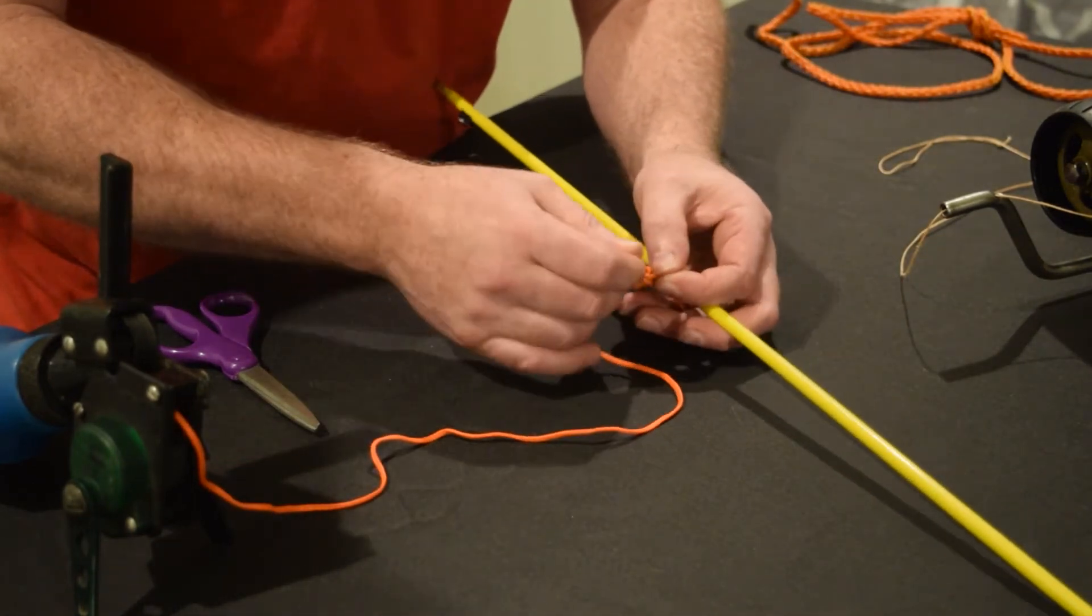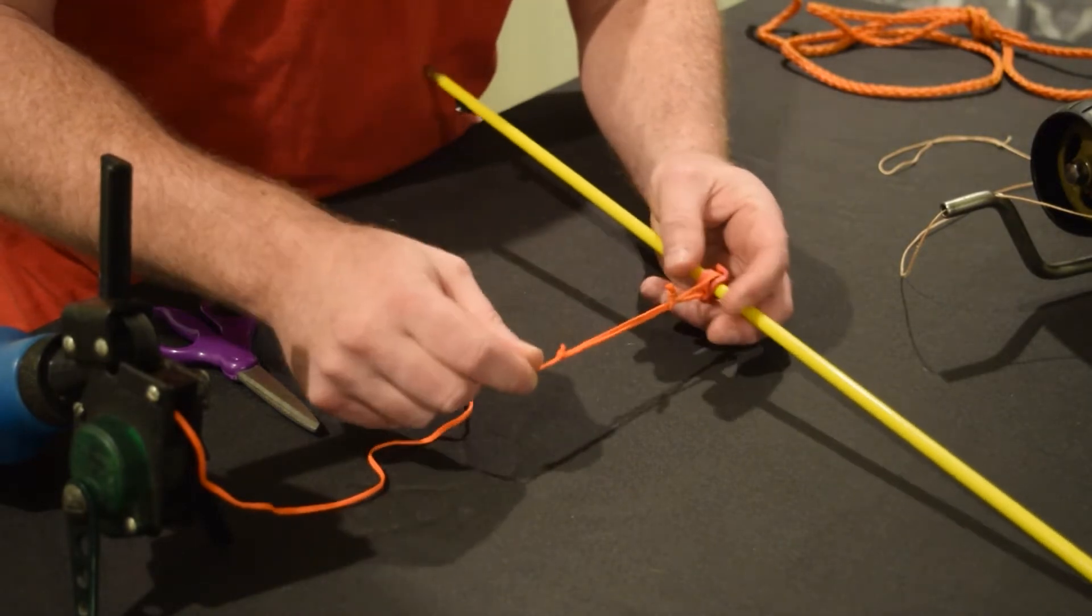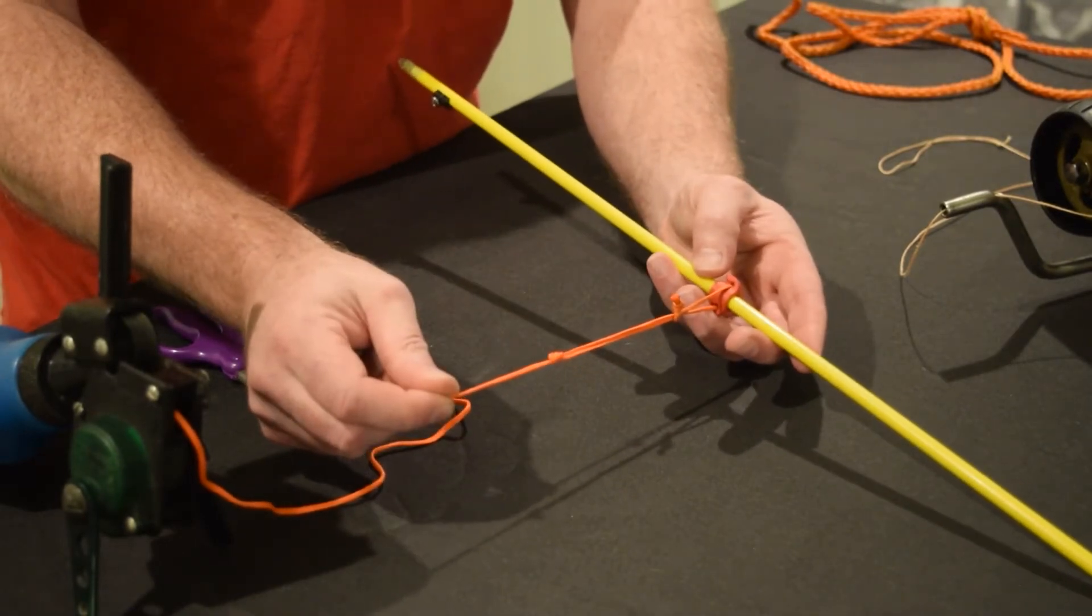Pull the knot through so that the line lines up, and now you have a nice solid connection loop-to-loop.